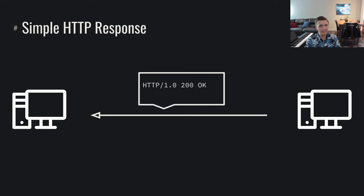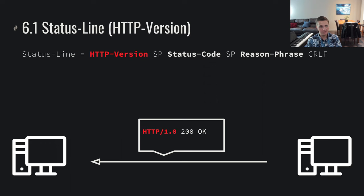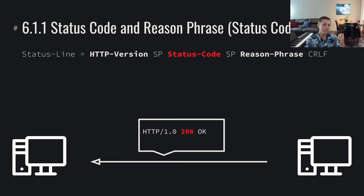Now let's take a look at this HTTP response. We're seeing HTTP 1.0, 200, OK. This is a status line. The status line is composed of an HTTP version — we're mirroring what the client sent. The client said it's speaking HTTP 1.0, and the server replies that it's also speaking HTTP 1.0. Then we go on to give a status code and then a reason phrase. The status code stuff basically tells the client what the server thinks about that request.